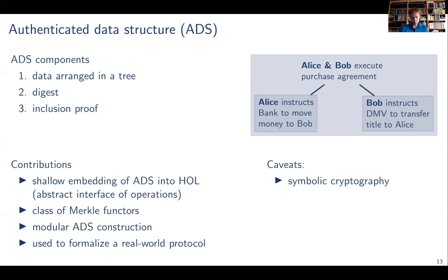There's one caveat. This is all about symbolic cryptography. So we're assuming that cryptographic primitives are perfect. In particular, there are no hash collisions.